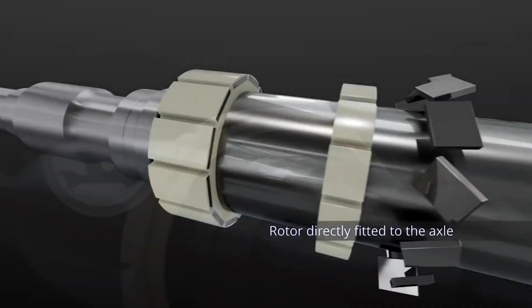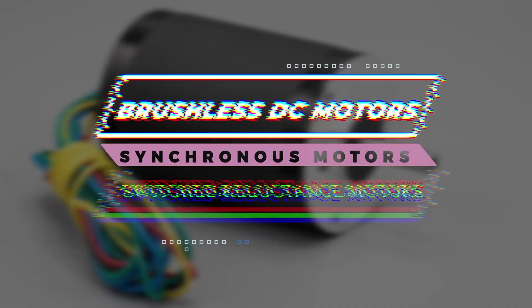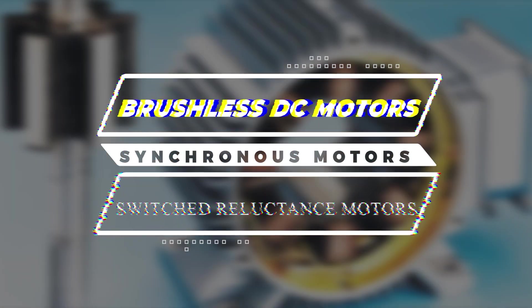There are several types of permanent magnetic motors, including brushless DC motors, synchronous motors, and switch reluctance motors.